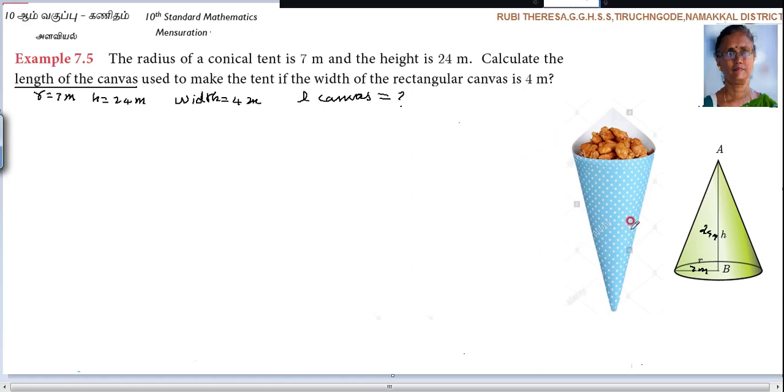Why I pasted the picture here is, when you are going to groundnut shop, while you are asking for it, they will have a rectangular sheet. Immediately they will fold into a cone and put the groundnut in it. Have you seen or not? For that purpose only I pasted the diagram here. Similarly, rectangular canvas is there.